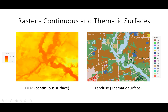In a thematic dataset, values don't change over certain regions. For example, a land use dataset has areas of only agricultural fields, only residential buildings, or other distinct types. Colors represent those distinct themes or land use types. Depending on whether you use a continuous or thematic dataset, you use different symbology — a stretched symbology for a continuous digital elevation model, and unique values symbology for each theme in a land use dataset.